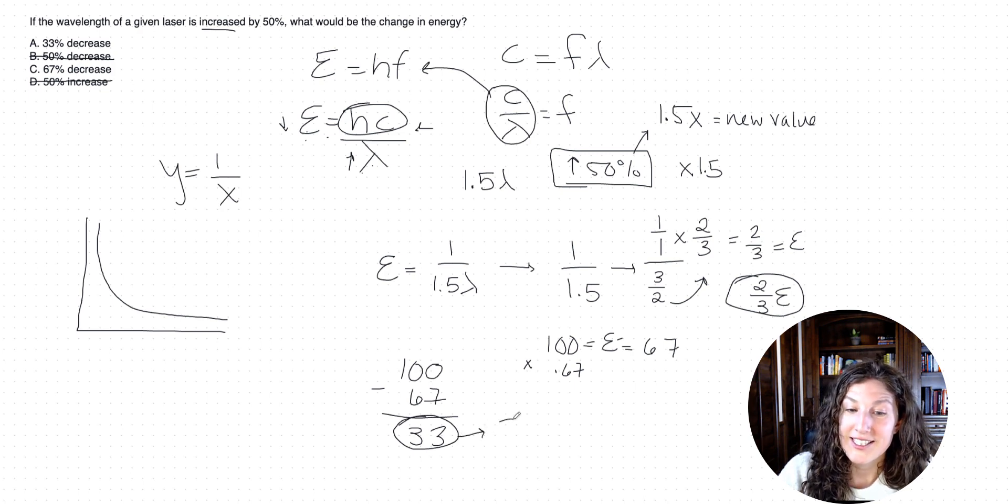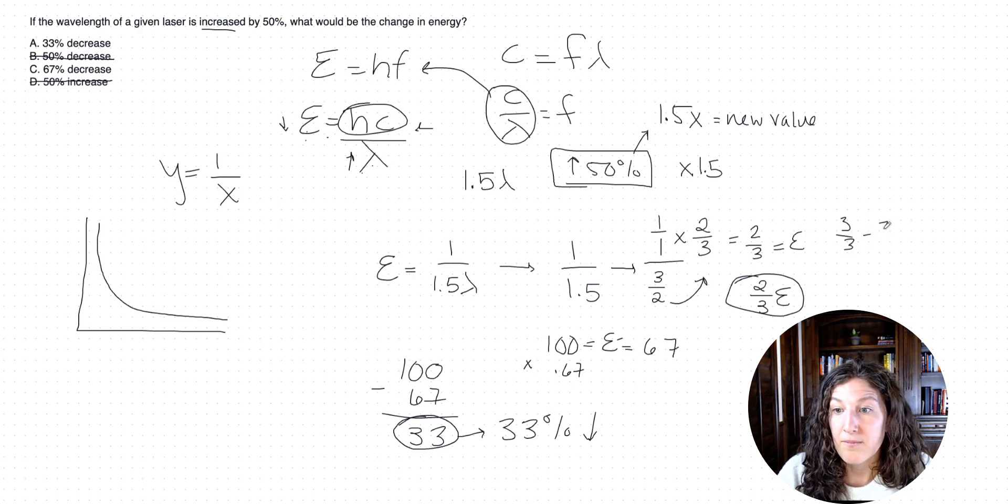I'm just using 100 because it's a really nice way to do this example math. Now on test day, what we can do is we can just take this fraction and say, okay, 100% would have been three-thirds, minus two-thirds. That's going to leave us with a one-third decrease. So you could also do it that way. I was just giving the example by showing it to you as a sample number.